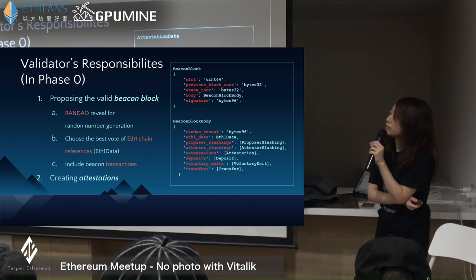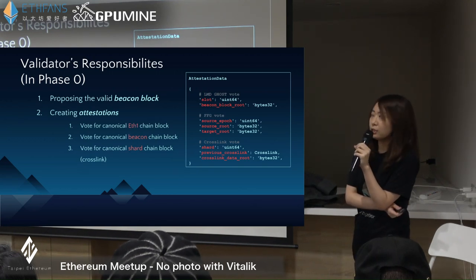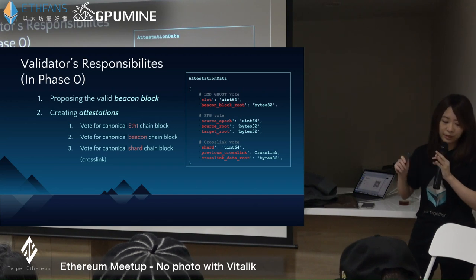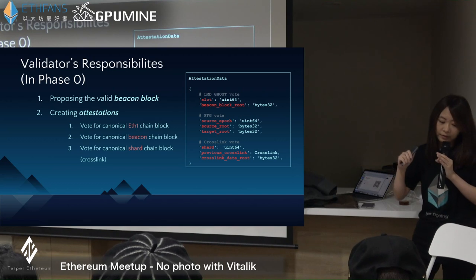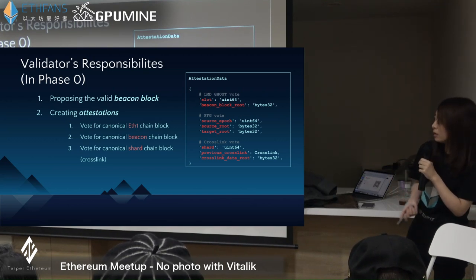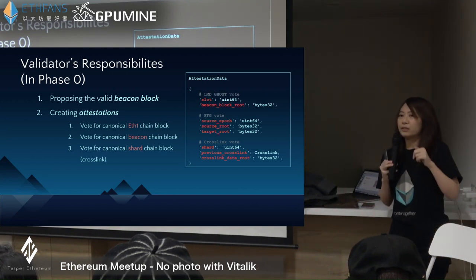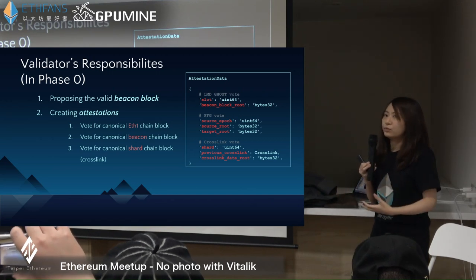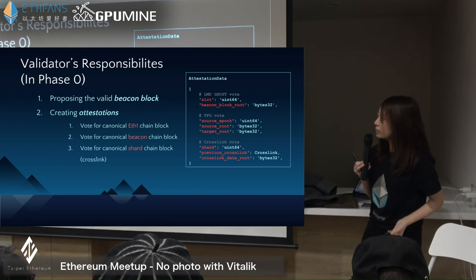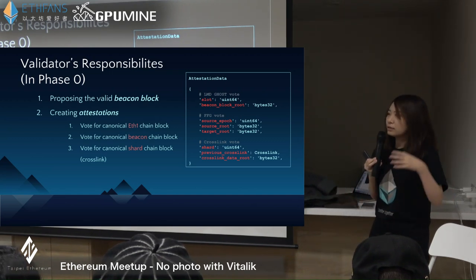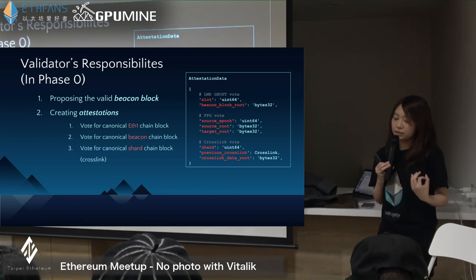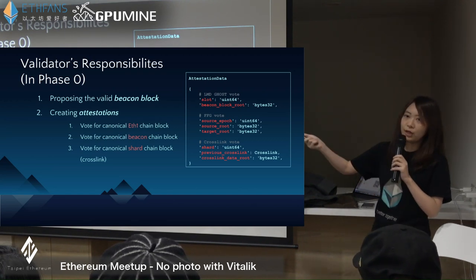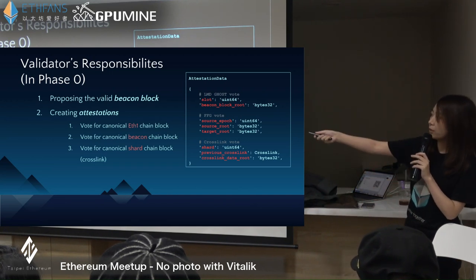Another important job for validators is creating attestations — like votes. A validator has to vote for what the current view of the chain is in their client. There are three different chains a validator needs to know about: first, the Ethereum 1 proof-of-work chain; second, the Beacon Chain; and third, every active validator is also responsible to attest to the shard chain. That message is called a crosslink.